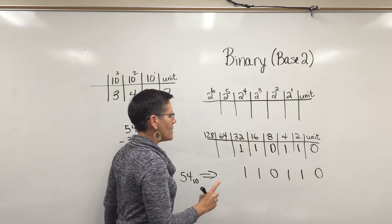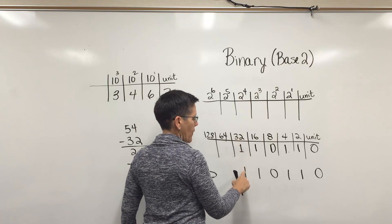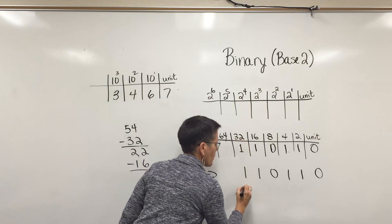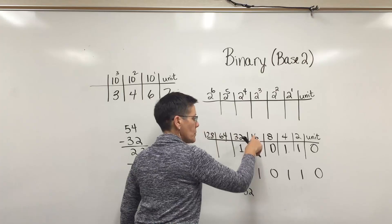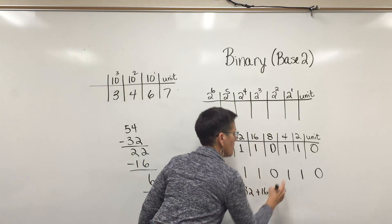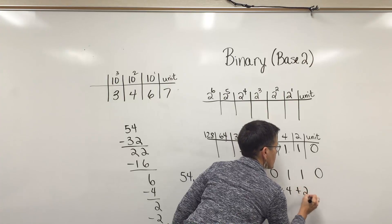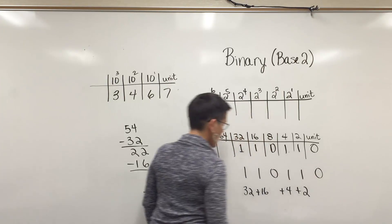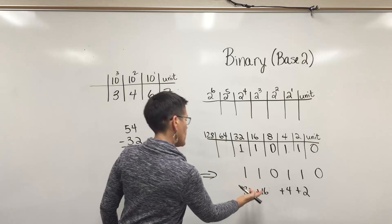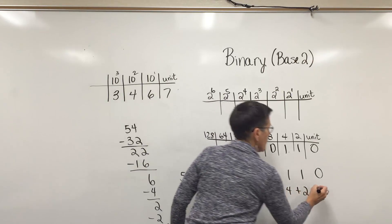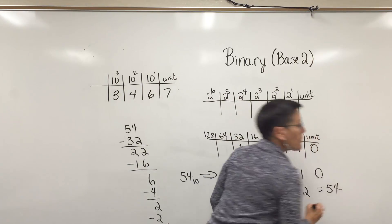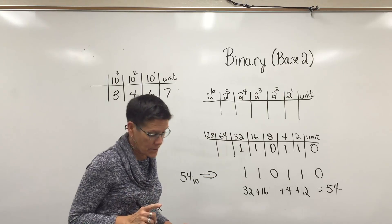I can check this by saying to myself, that position represents the number 32, this represents the number 16, this represents the number four and the number two, and then of course zero there. If I add those up, that looks like 48 and six is a total of 54. So I can tell I did that correctly.